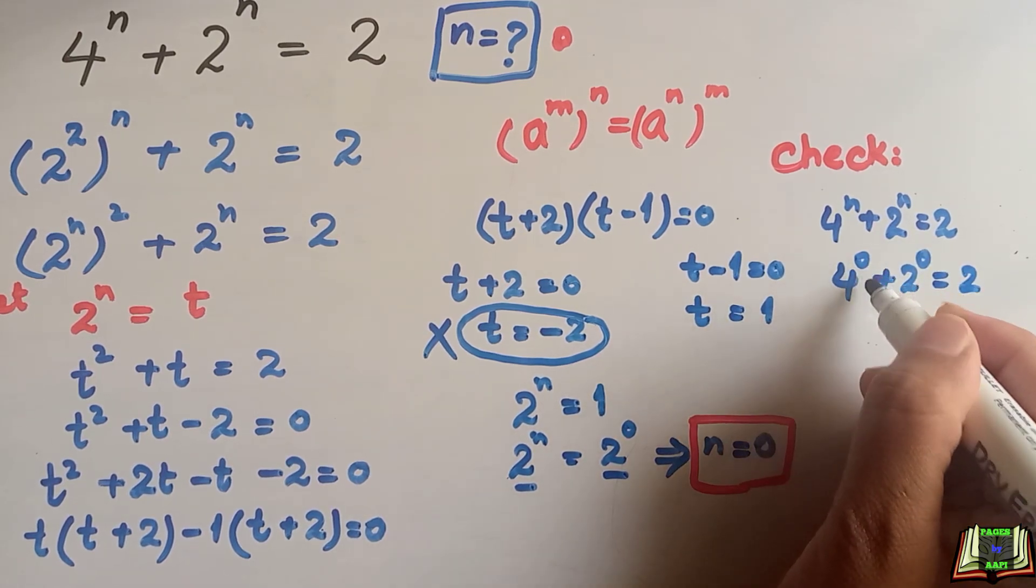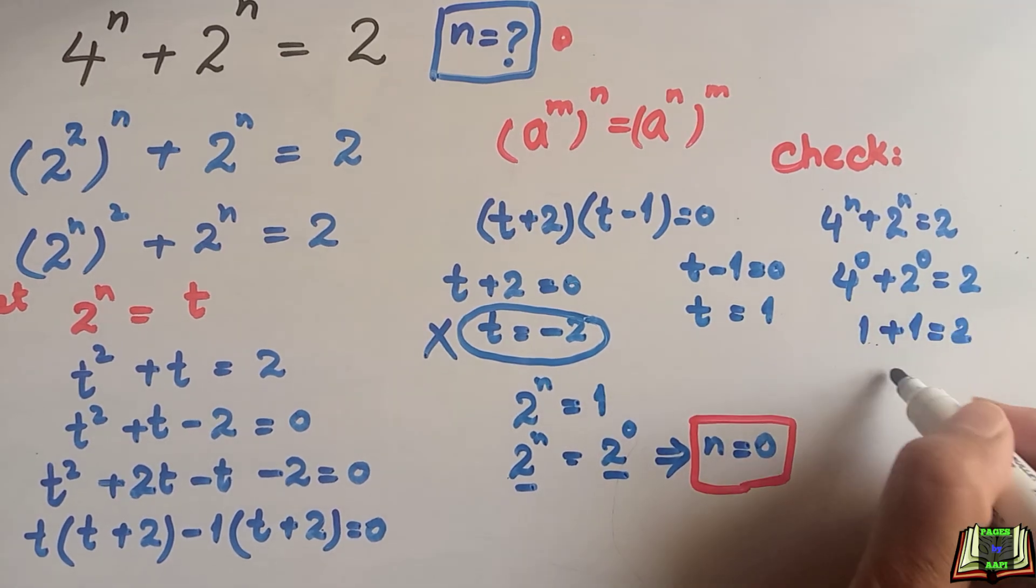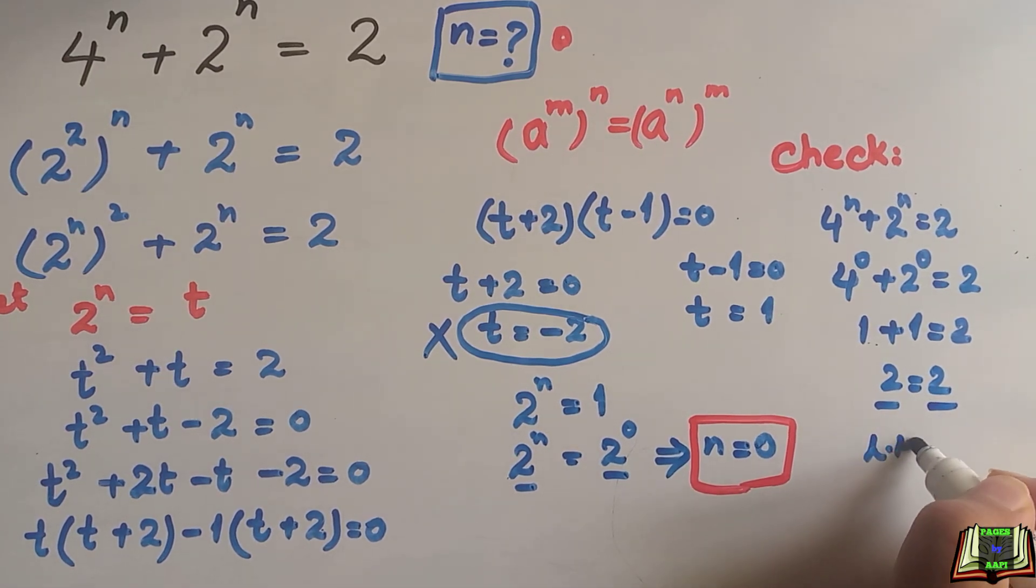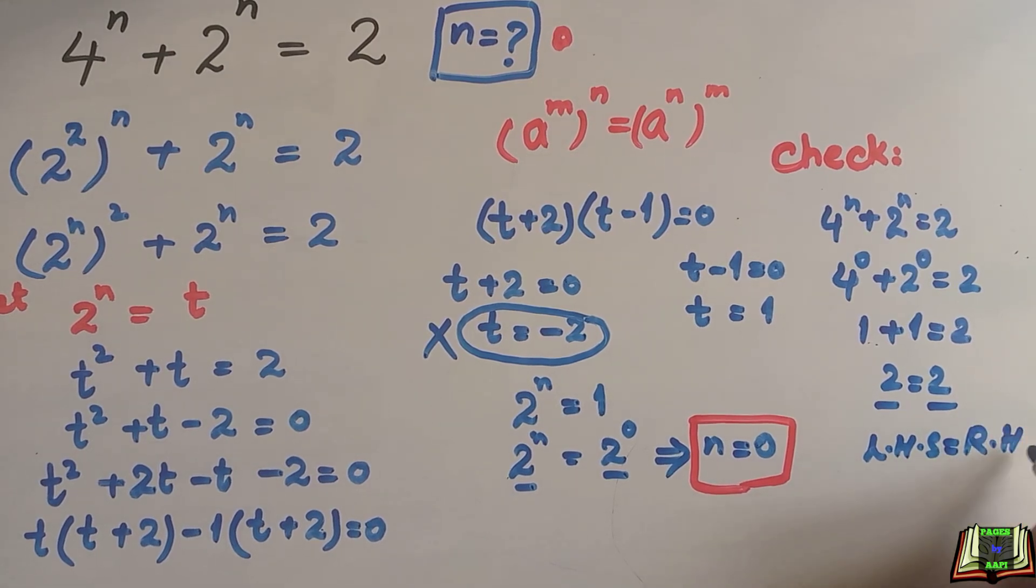When any number has power 0, that is equal to 1. 1 plus this is also equal to 1 is equal to 2. As 2 is equal to 2, this means left hand side is equal to right hand side. It means that we got the correct value of n which is equal to 0.